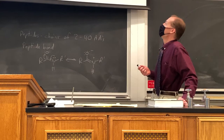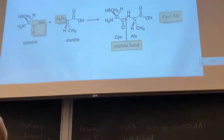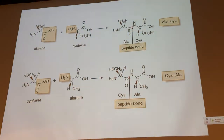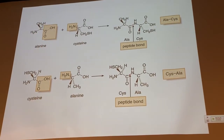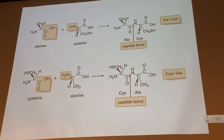This figure here is not the best design figure because it kind of implies this is how you would synthesize these compounds. As you'll see, it is not. You cannot just mix alanine and cysteine and get these individual compounds — you have to use protecting groups. But what we want to look at here is just what's on the right side of the screen, which shows dipeptides — two dipeptides made up of two amino acids.